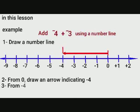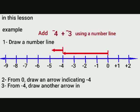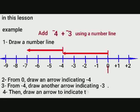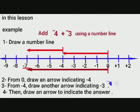From negative 4, draw another arrow facing the side of negatives indicating negative 3. After that, draw an arrow to indicate the answer. In this case, the answer is negative 7.